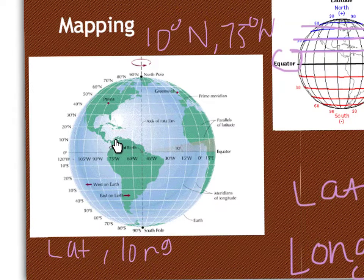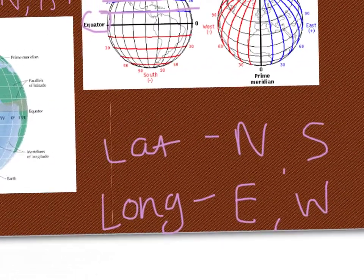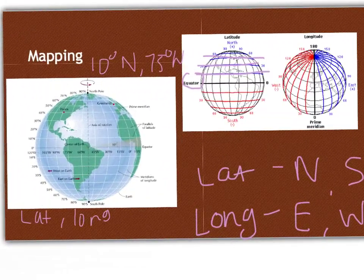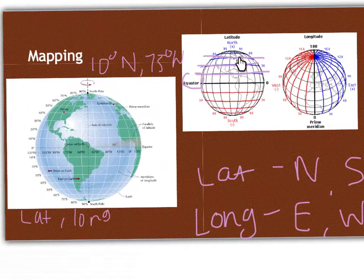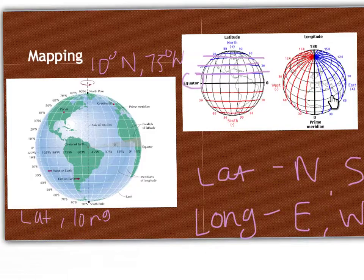So those are the important things to remember. You do latitude first, longitude second. Latitude is measured in north-south, longitude is east-west. And remember, latitude goes horizontal lines, longitude are up and down lines.